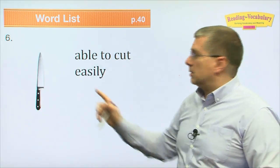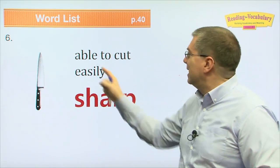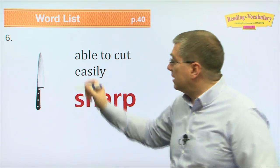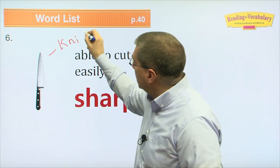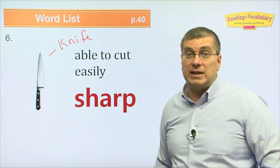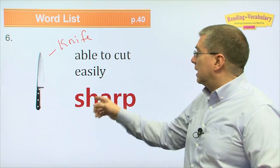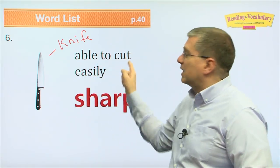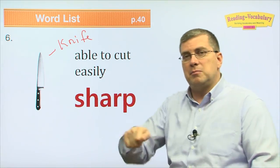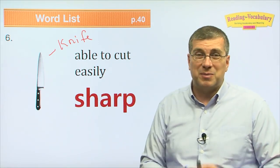Number six: be careful — that could be very sharp. Sharp means able to cut easily. A knife is another type of tool; be careful with many tools and don't use them in the wrong way. A knife is very sharp and able to cut something easily. If you're cutting tomatoes or meat, your knife should be sharp — but be careful.